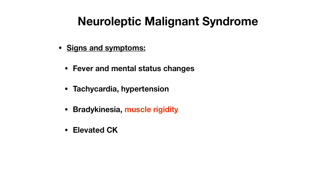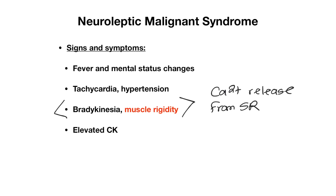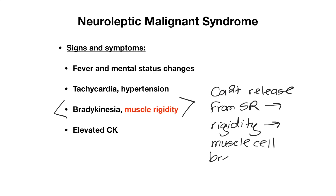How does a person with NMS present? Signs and symptoms include fever and mental status changes, tachycardia and hypertension. Something pretty characteristic to NMS includes bradykinesia and especially muscle rigidity, which can be described as lead pipe muscle rigidity, or stiff arms and legs, or difficulty bending the legs. This happens because antipsychotics cause calcium release from the sarcoplasmic reticulum within muscle cells, leading to rigidity and muscle cell breakdown. So sometimes with NMS you can see an elevated CK.